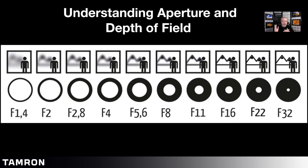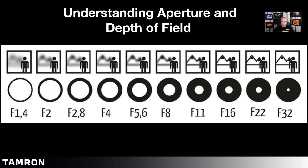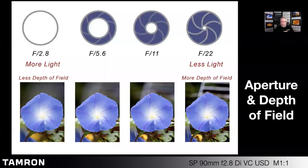So if you're shooting at f4, f2.8, or even f1.4 if your lens goes that wide, you're going to be able to just focus on a subject and anything in the foreground or background is going to be soft. So if you want to specifically isolate a subject, that's how you're going to do it. As you begin to stop down, more and more comes into sharpness.